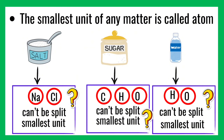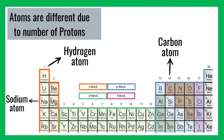When we look at sugar under an electron microscope, we observe that sugar is made up of carbon, hydrogen, and oxygen. Carbon, hydrogen, and oxygen can't be split further into simpler substances, so carbon, hydrogen, and oxygen are the smallest unit — the basic unit — of sugar. When we look at water under an electron microscope, we observe that water is made up of hydrogen and oxygen. Hydrogen and oxygen can't be split further, so they are the basic unit of water. In science, the smallest unit of matter is called an atom. The periodic table has 118 elements.